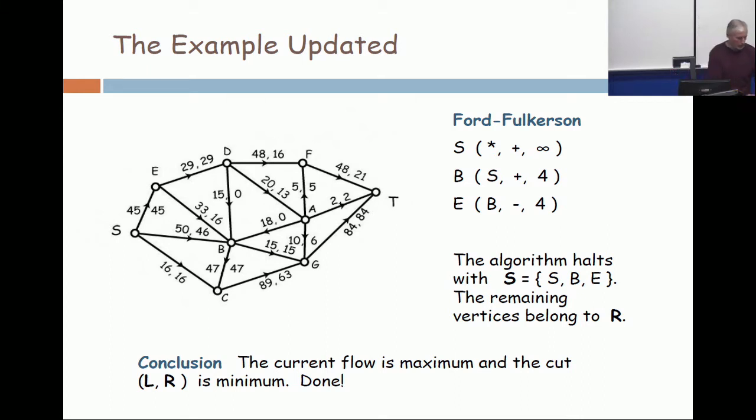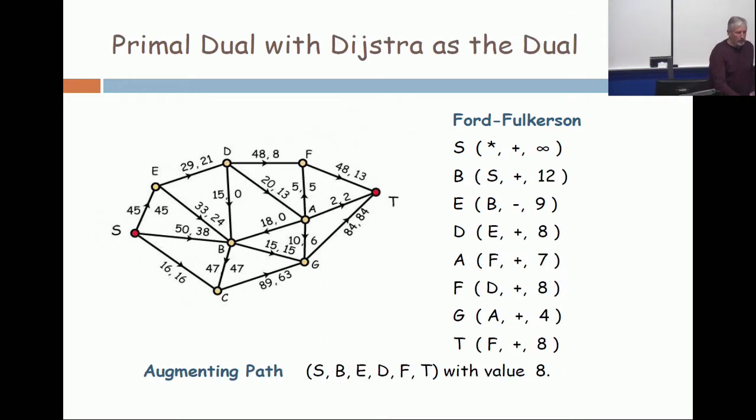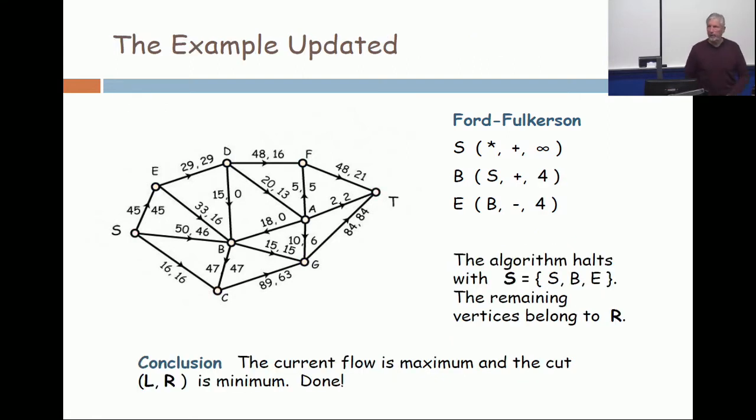Let me go backwards. See the labeling on B? S plus twelve. Now the labeling on B is S plus four, because the spare capacity has been reduced down to four.